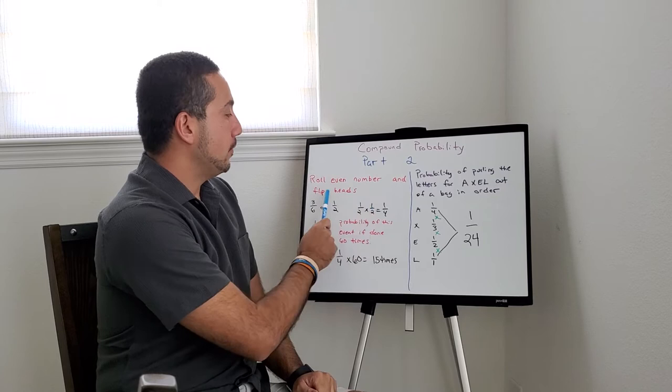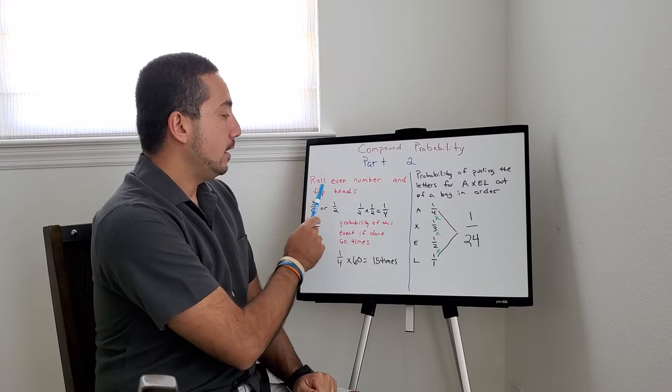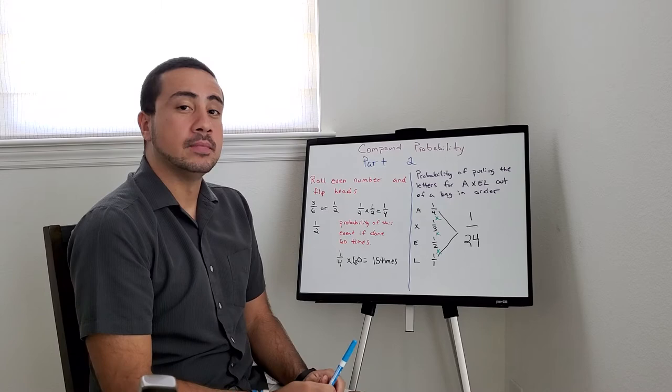So now that you know how to do the compound, let's say you roll an even number and you flip heads. We already know it's 3 over 6 simplified to 1 over 2 and 1 over 2 for the coin. 1 over 2 times 1 over 2 equals 1 over 4.